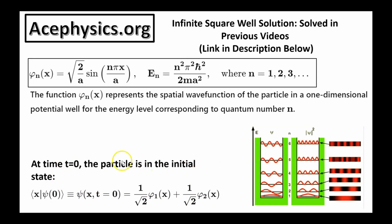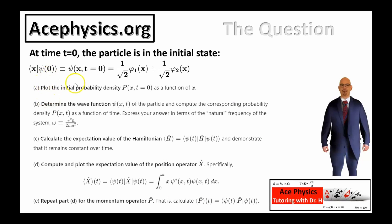This wave function in the position basis at time t equals 0 is in an equal amount of the n equals 1 and the n equals 2 energy eigenstates. Here's the problem I'll be solving. We are given the wave function at t equals 0. Part A: plot the initial probability density as a function of x. Part B: determine the wave function psi of x and t and compute the corresponding probability density as a function of time. Part C: calculate the expectation value of the Hamiltonian — that is, find the average energy of the particle as a function of time.